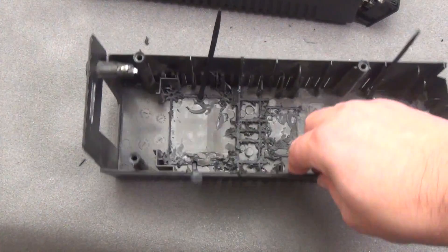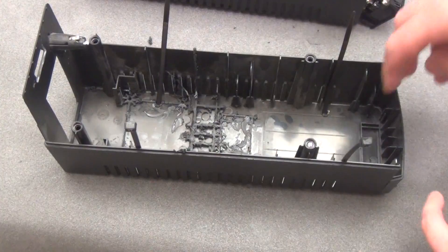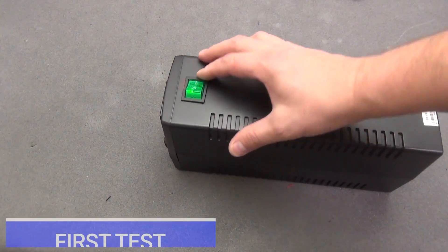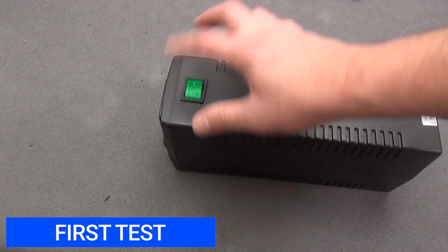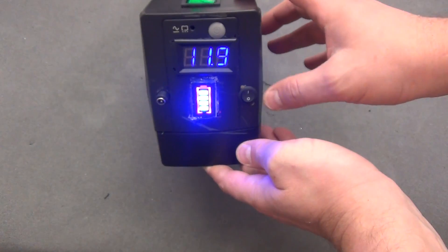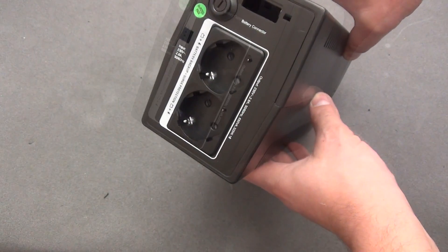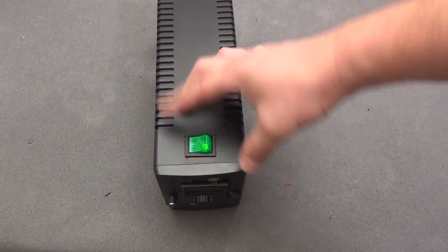I almost forgot the most important thing, and how will I charge it. Here I will also make a hole. Turns on and off from above 220V. Here we have in the charging socket. Here we have an indication of voltage, residual battery capacity. And accordingly, on the back there are two sockets. It turned out to be a kind of eco flow.